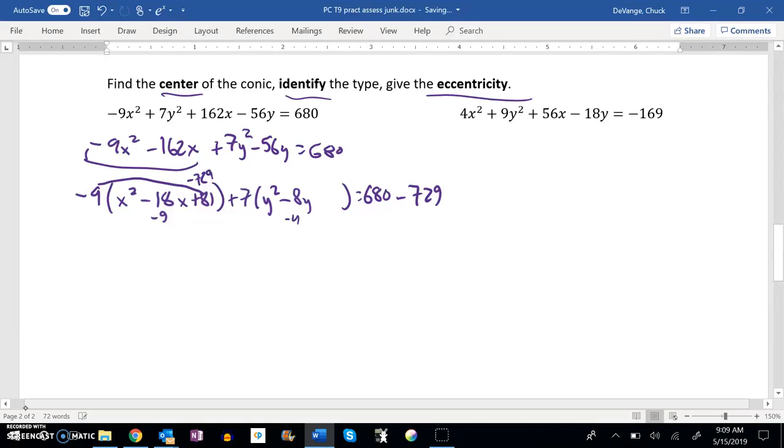Complete the square here. Half of negative 8 is negative 4. Square of that is 16. But it's not really worth 16, it's worth 7 times 16, which is 112. So I'm going to add 112 here.